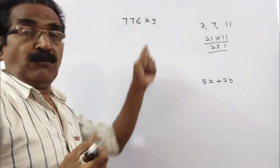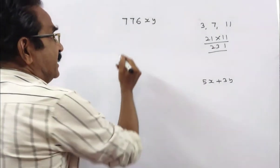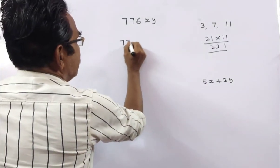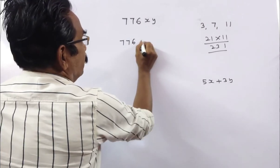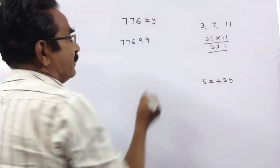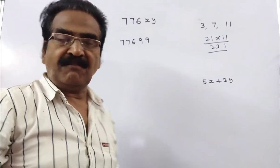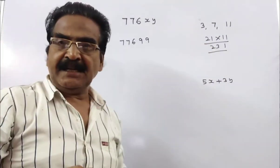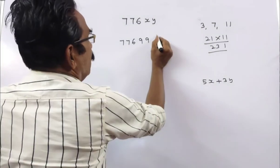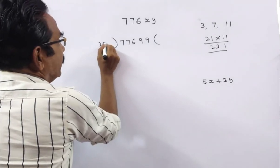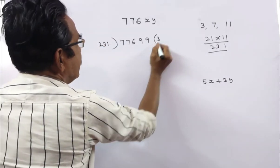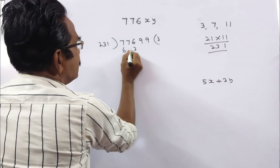Friends, for this we have to consider the number 776. We have to take 9 in place of both X and Y and divide by 231. So by 231, 231, 3s, 3, 1, 3s, 69.